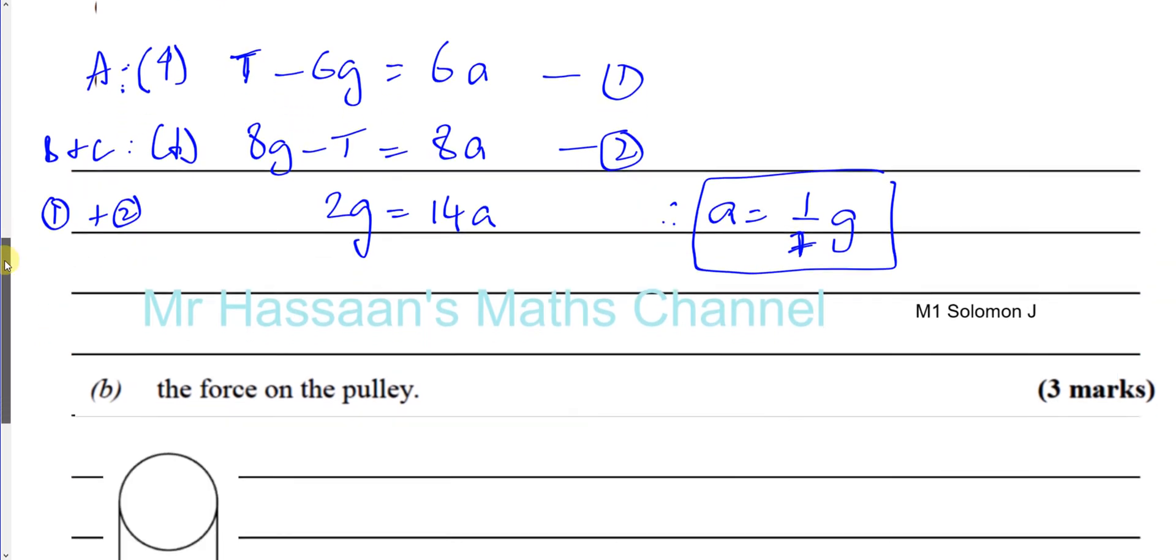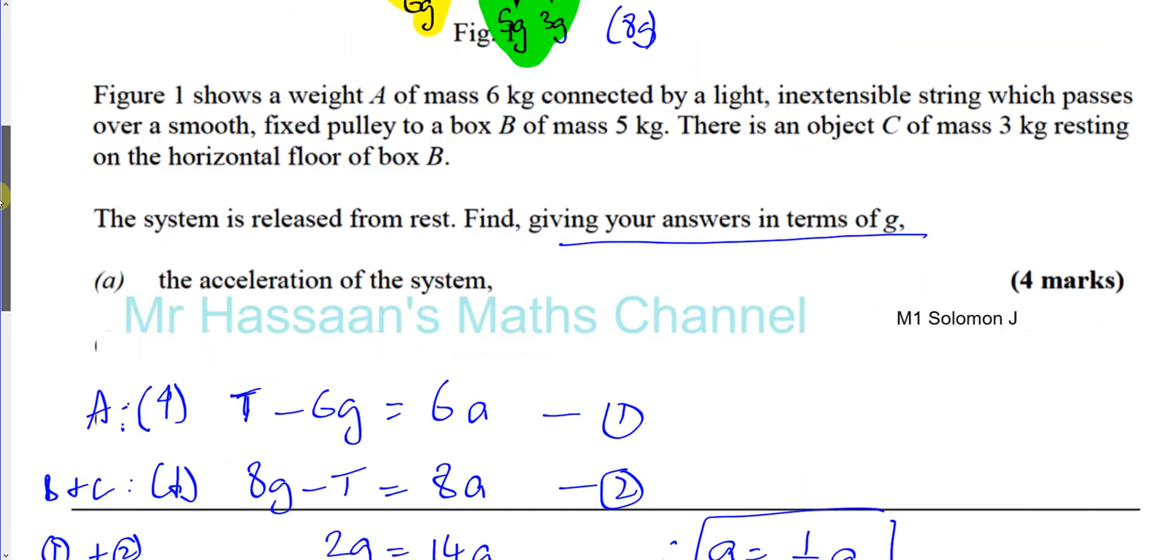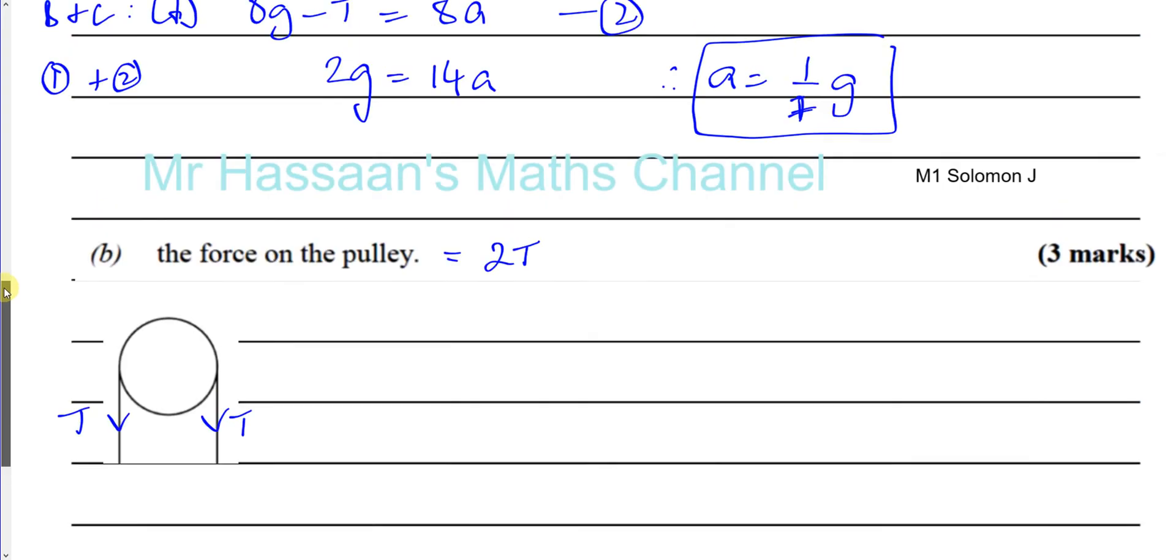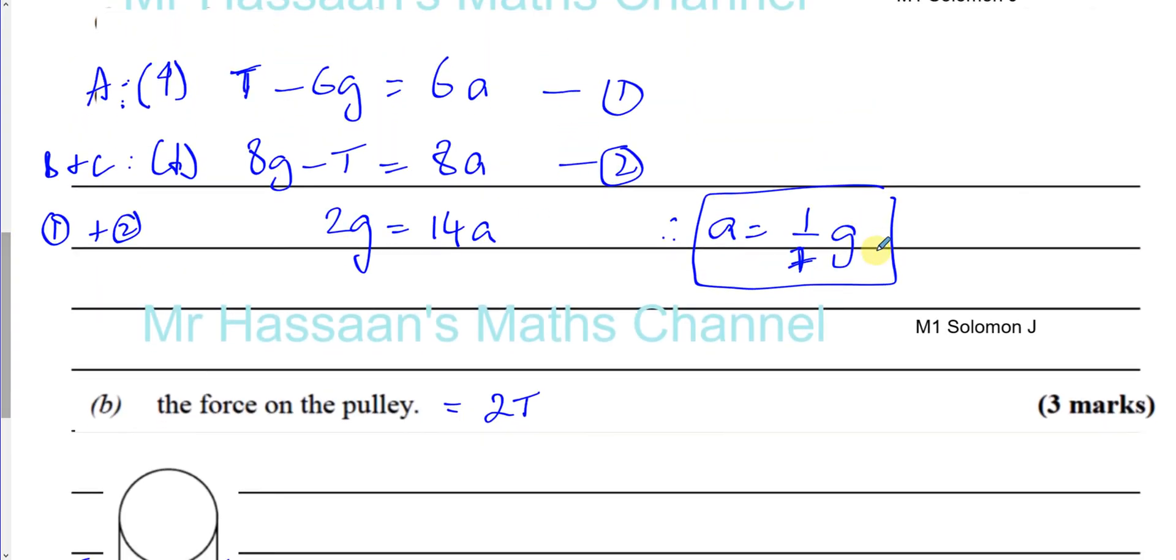Then it says find the force on the pulley. As we see that there's a force from the string acting on the pulley, which is the tension on this side and the tension on this side. So the force on the pulley is actually two times the tension. And as I have already found the acceleration, I can use one of these equations to find the tension.